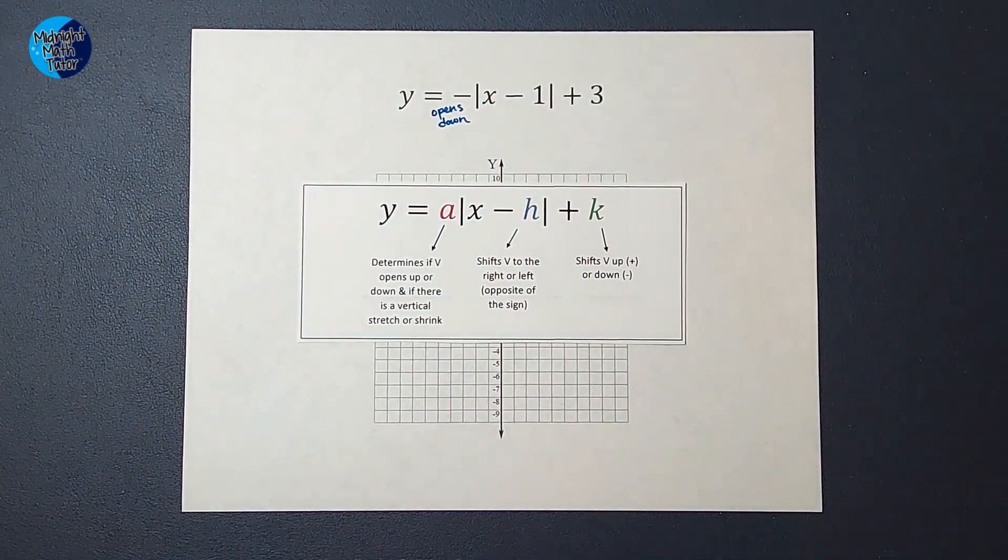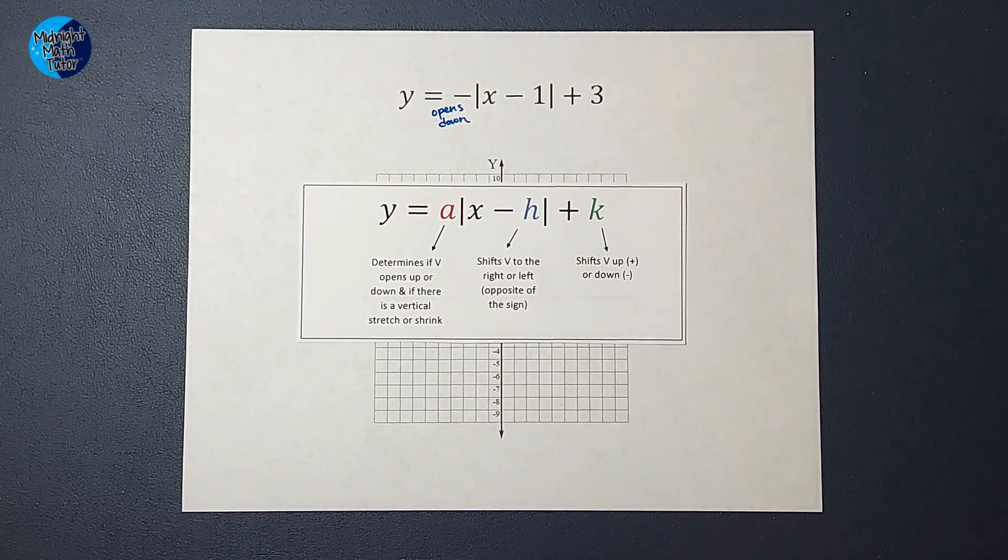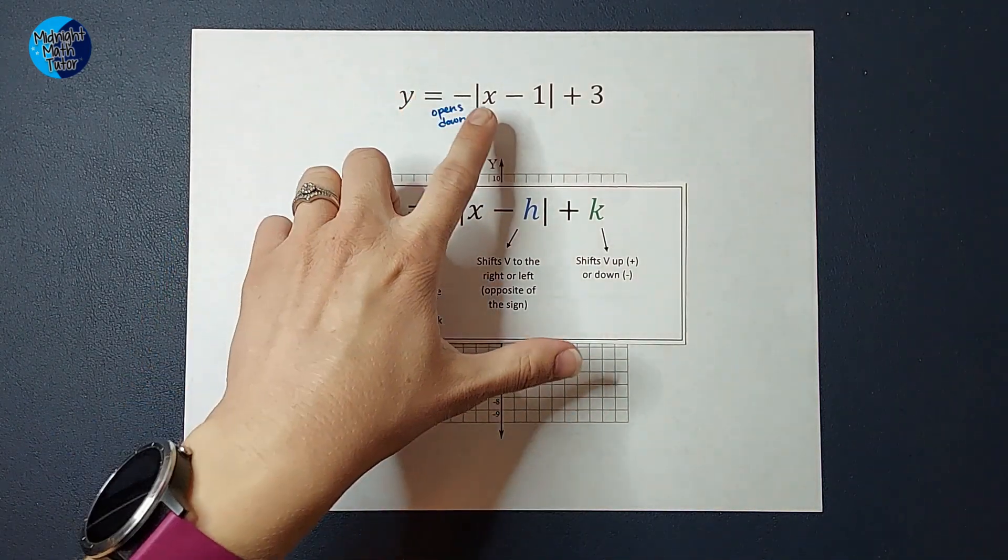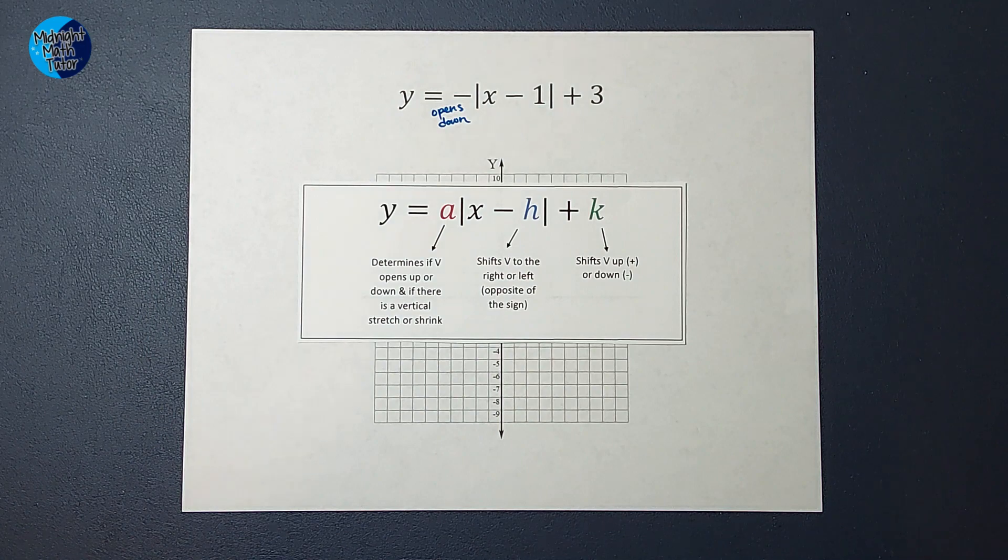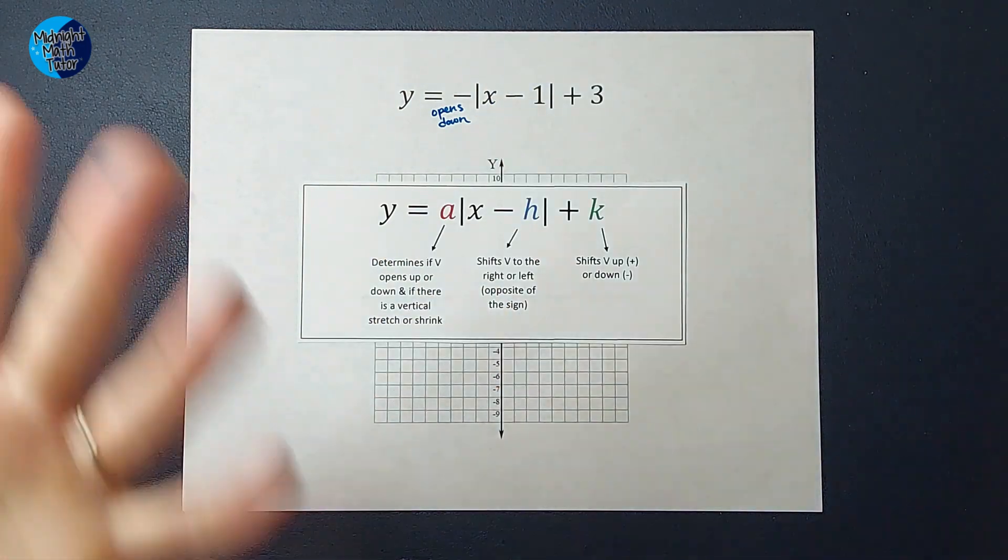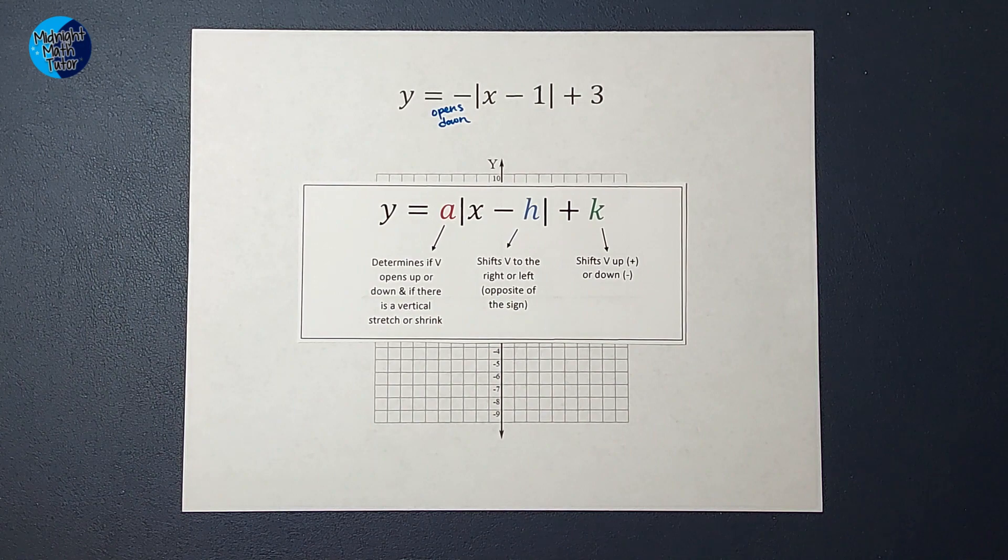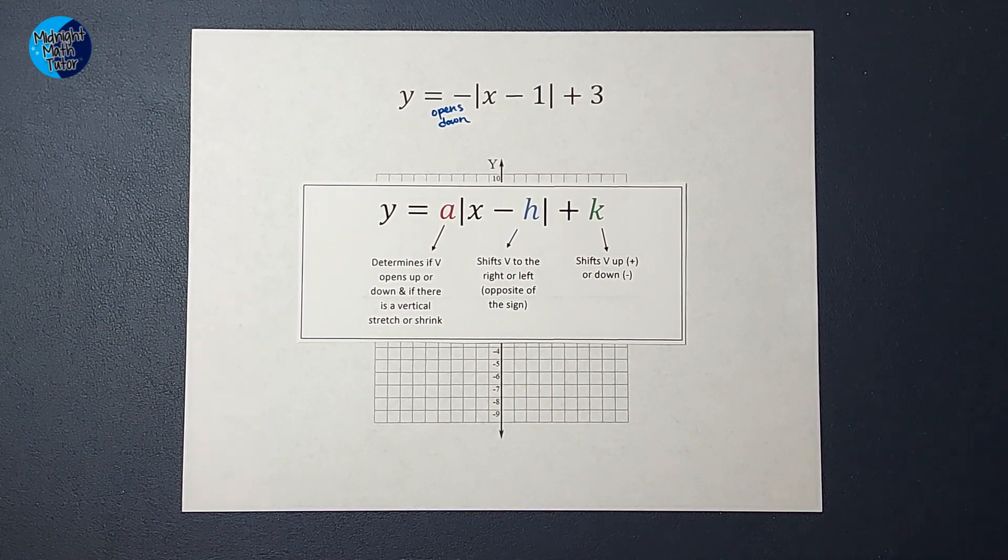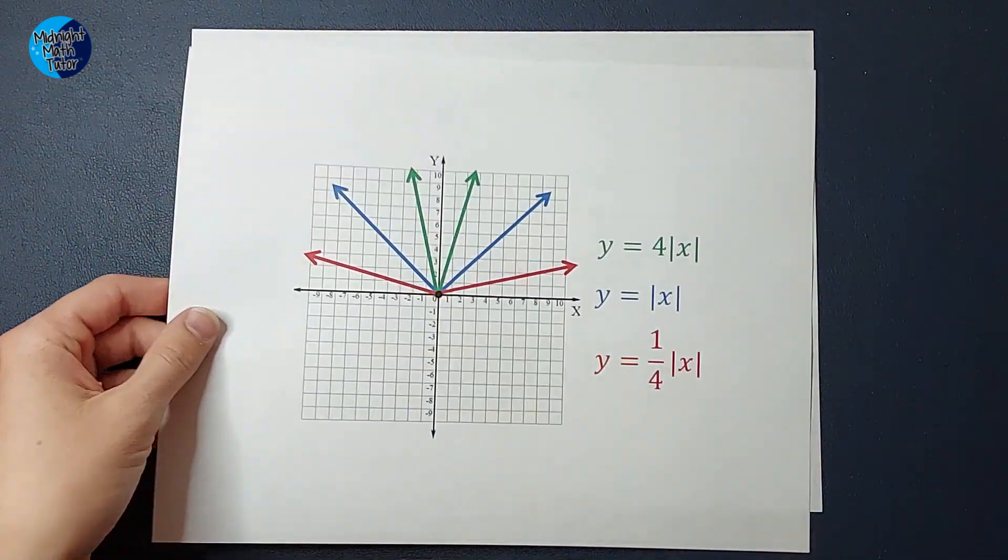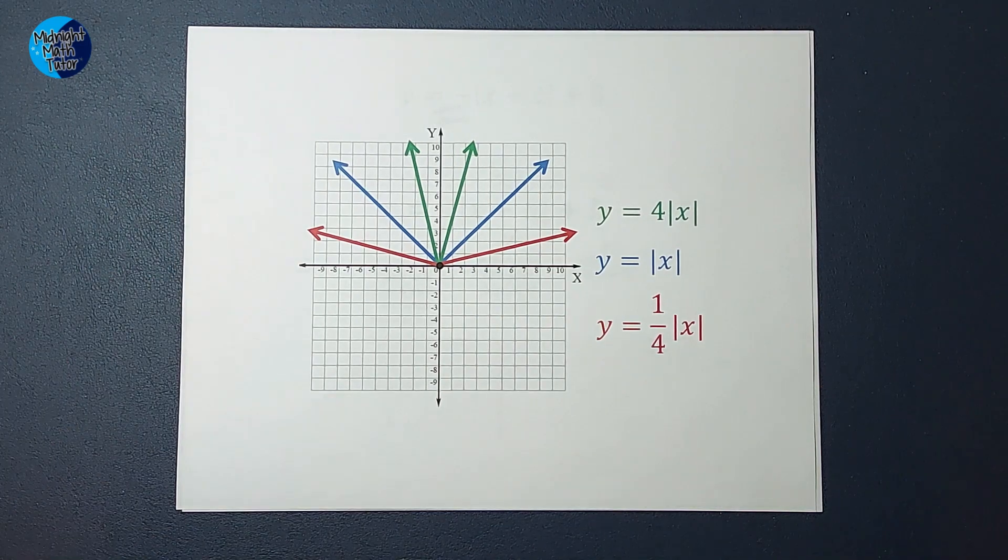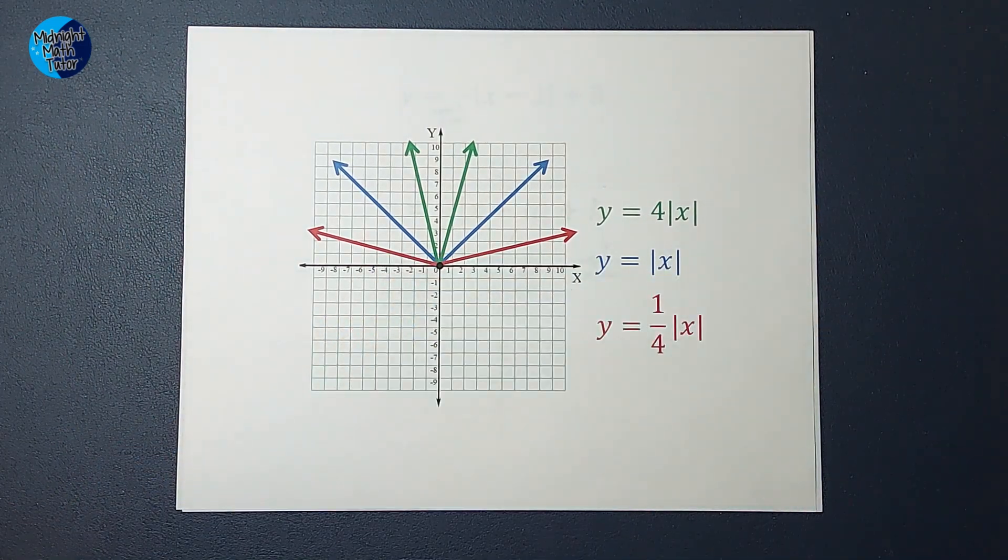Now, it doesn't apply to this problem, but if you have a number out here that's something other than there's really an invisible one there, right, but if you have a different number out front, depending on if it's bigger than one or a fraction will change your graph. If you want to see a video where I do an example like this, I'll link one in the corner.